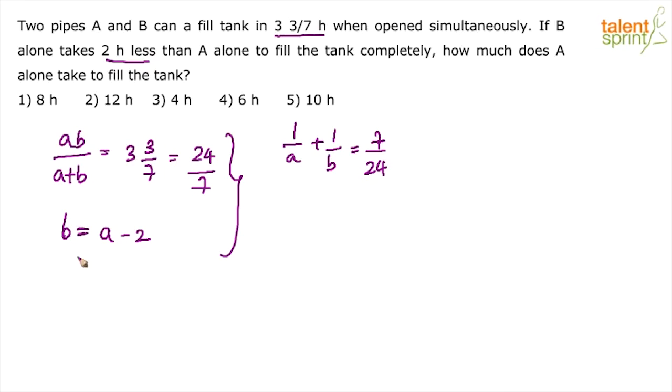Again, we know that B is equal to A minus 2. So the second equation remains the same: B equals A minus 2. So what do we get here? 1 by A plus 1 by A minus 2 equals 7 by 24. Now what happens?